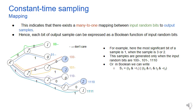In other words, we can express each bit of output samples using a boolean function of input random bits. For example, here the most significant bit of a sample is 1 when the sample is 3 or 2. These samples are generated only when the input random bits are as shown here. Or in boolean, we can express S1 as shown. This expression sets the MSB to 1 only when it receives the above input bit strings.